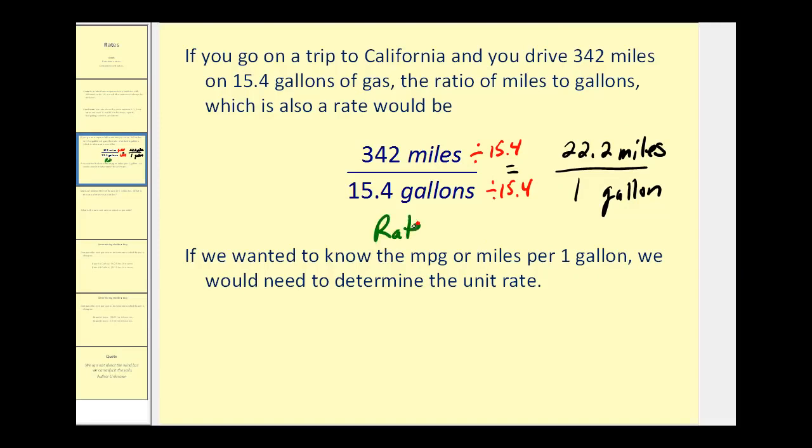So here we have our rate, and here we have our unit rate. As you know, when you see ads for cars, manufacturers usually express this unit rate as 22.2 mpg, representing the miles per one gallon.